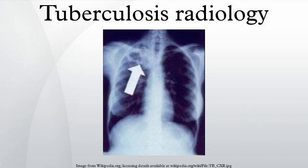Discrete fibrotic scar or linear opacity: discrete linear or reticular densities within the lung. The edges of these densities should be distinct and there should be no suggestion of airspace opacification or haziness between or surrounding these densities. Calcification can be present within the lesion, in which case it is called a fibrocalcific scar. Discrete nodules without calcification: one or more nodular densities with distinct borders and without any surrounding airspace opacification. Nodules are generally round or have rounded edges, allowing them to be distinguished from infiltrates. These nodules must be non-calcified; calcified nodules are included in the category of other X-ray findings.